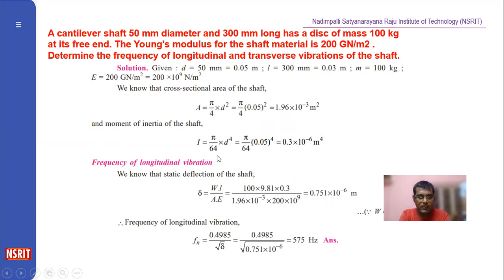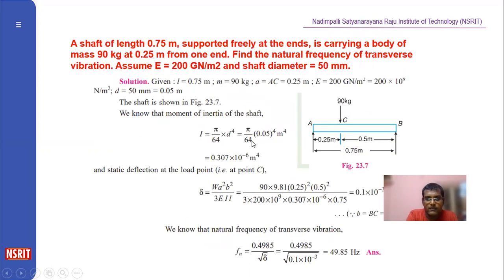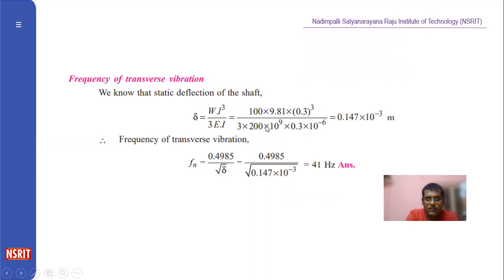Pi d⁴/64. So after that, you have to substitute here. Then you will get the frequency of transverse vibrations. That is 41 Hz.